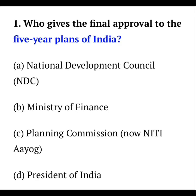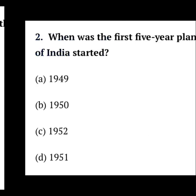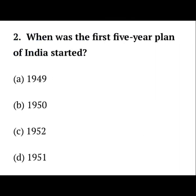Second question: When was India's first Five-Year Plan started? Options are 1949, 1950, 1952, and 1951. If you've watched the video, you may recall that the Planning Commission was established in 1950 — that's the only hint I can give. Recall the facts and mark the correct answer.